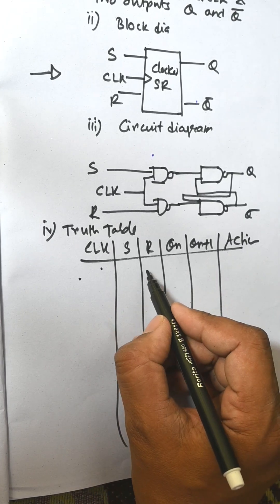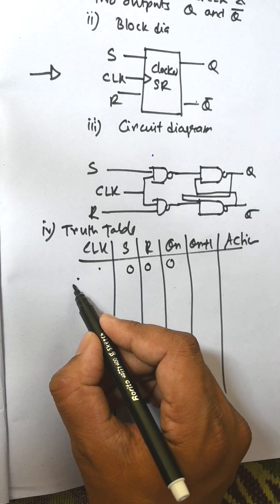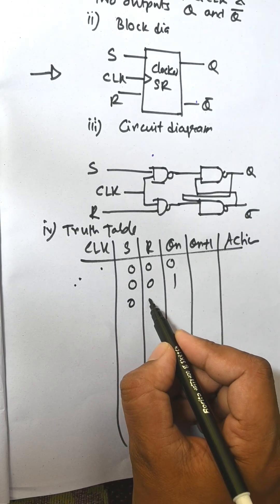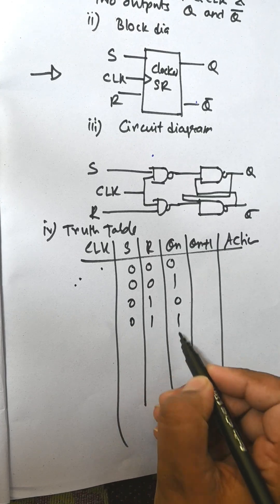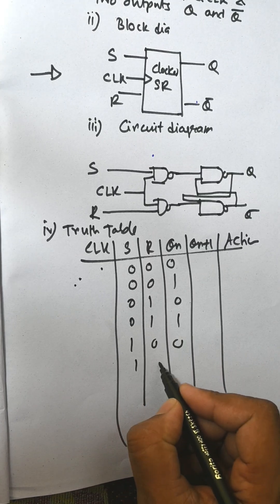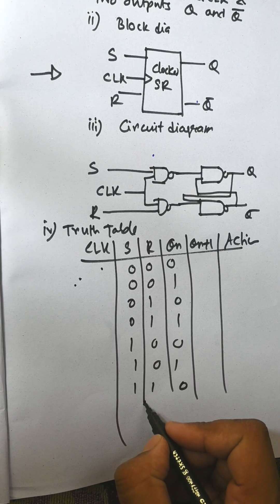Then we need to consider three inputs: 0-0-0, 0-0-1, 0-1-0, 0-1-1, 1-0-0, 1-0-1, 1-1-0, and 1-1-1.